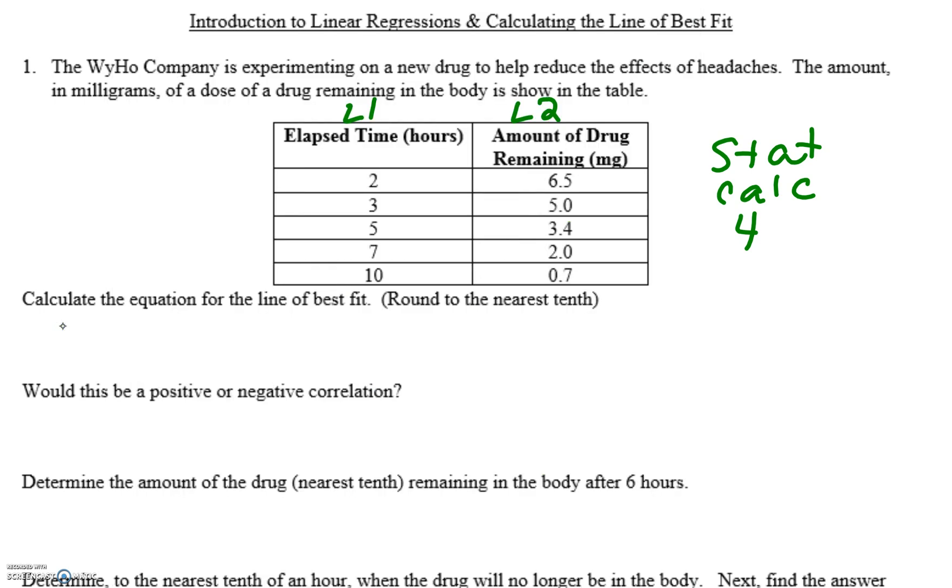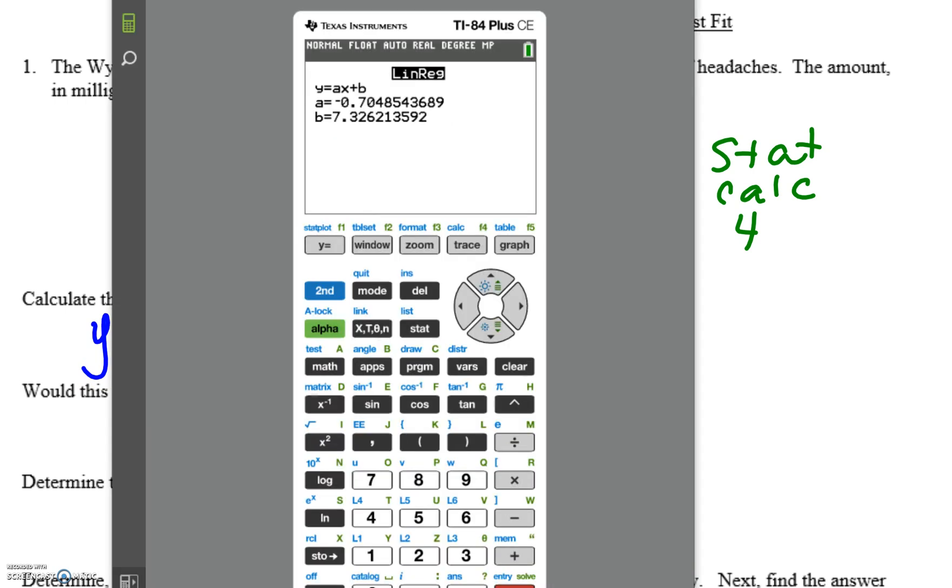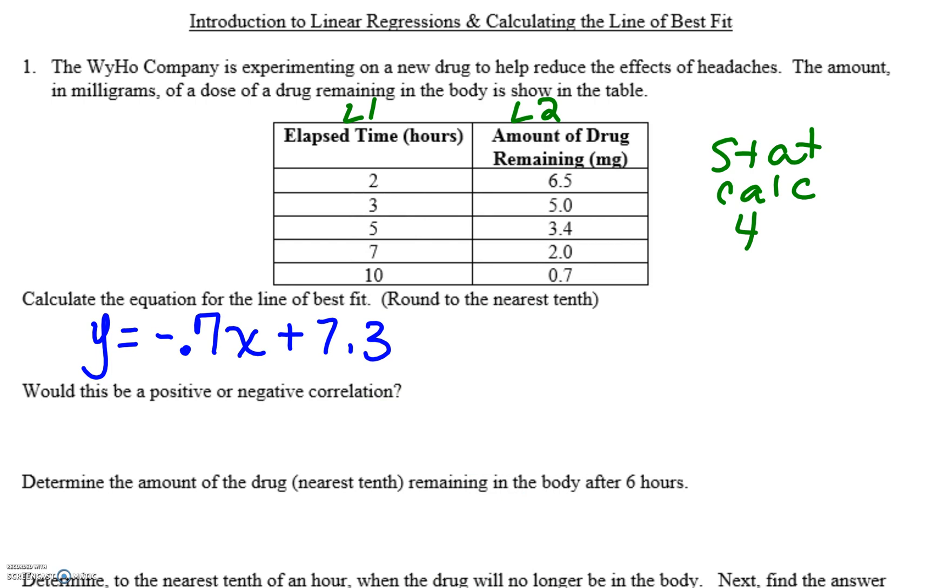And then this is the equation that we're going to create for part one. So part one says round all your values to the nearest tenth. So we have y equals negative 0.7x plus 7.3. The next question said, would this be a positive or negative correlation? We should see that we have a negative slope. So it will be a negative correlation.